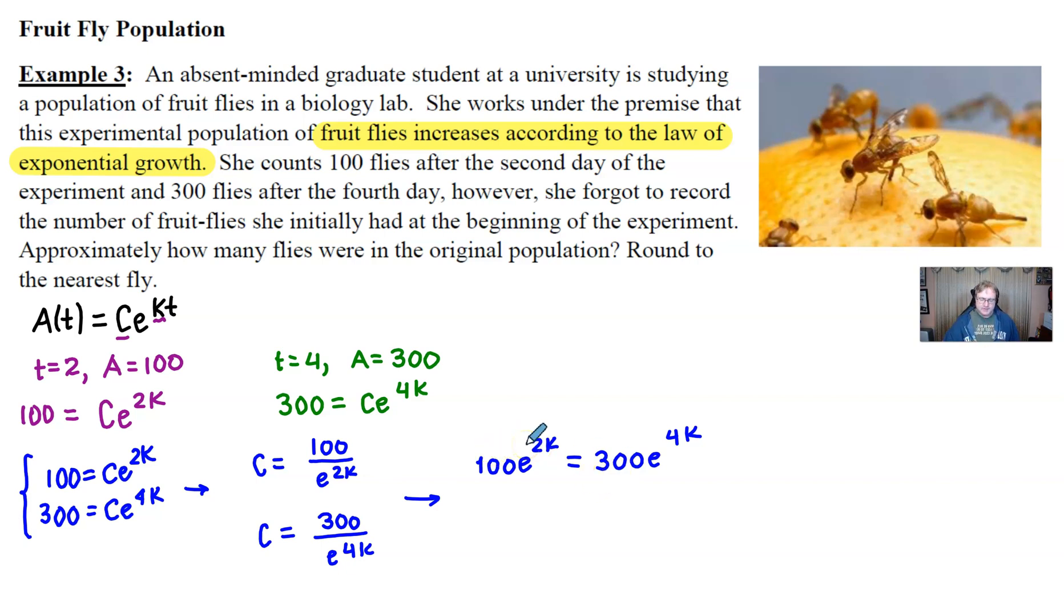If I divide both sides by e^(2k), now think about this, you would have e^(4k) divided by e^(2k). That means you can subtract the exponents and make that your power of your base e. Now I will take the natural log of both sides as typical to get the k by itself.